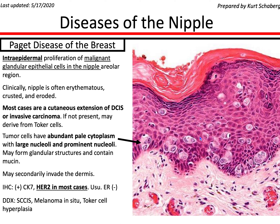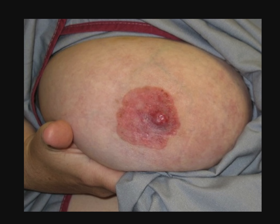In terms of etiology, Paget disease of the breast is thought to be a cutaneous extension of DCIS or invasive carcinoma. Clinically, the nipple will be erythematous, eroded, and crusted. Here is a clinical picture of Paget disease of the nipple.